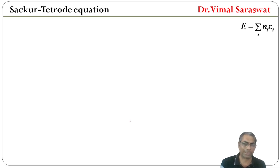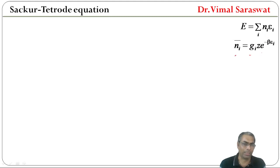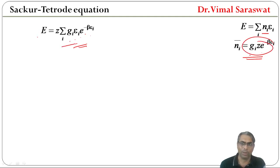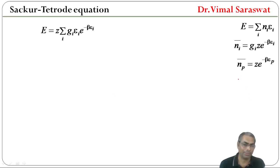The total energy of the system is E = Σi ni·Ei, and N-bar-i for Boltzmann gas is Z · e^(-βEi). Substituting, E = Z · Σi Gi · Ei · e^(-βEi).